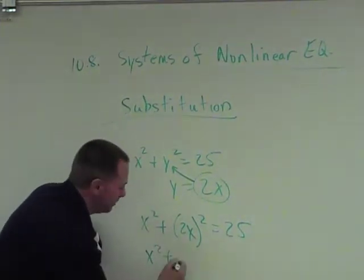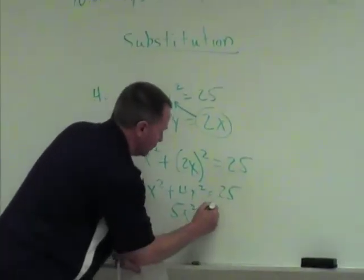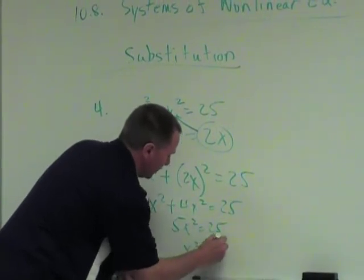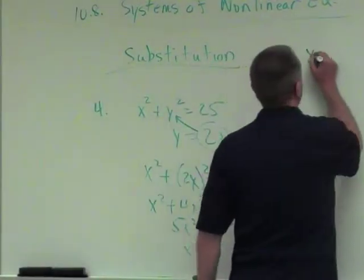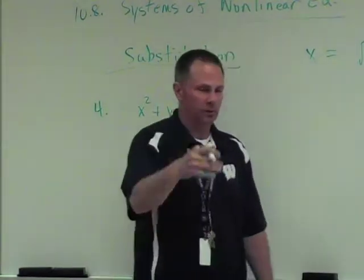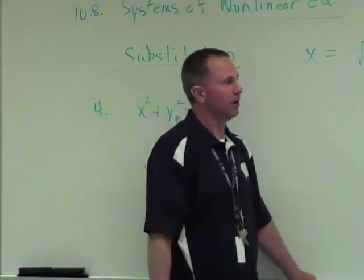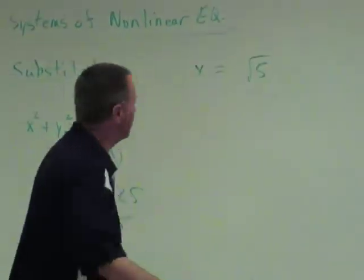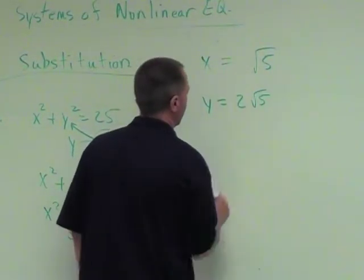When you square 2x, that becomes 4x squared. So that's 5x squared equals 25. Divide by 5, x squared equals 5. How do I solve that? Square root. So x is going to be what? Square root of 5. If we need to graph it, then you go ahead and use your calculator. We'll get to graphing it in our last example. What do you do with that information then? Plug it back in. Plug it back into one of the original equations.